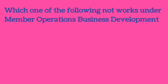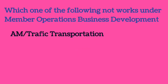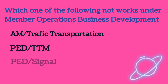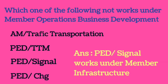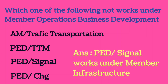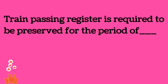Which of the following does NOT work under Member Operation Business Development (O&BD)? Option A is AM Traffic Transportation, Option B is PED TTM, Option C is PED Signal, and Option D is PED Coaching. The answer is PED Signal, as it works under Member Infrastructure.